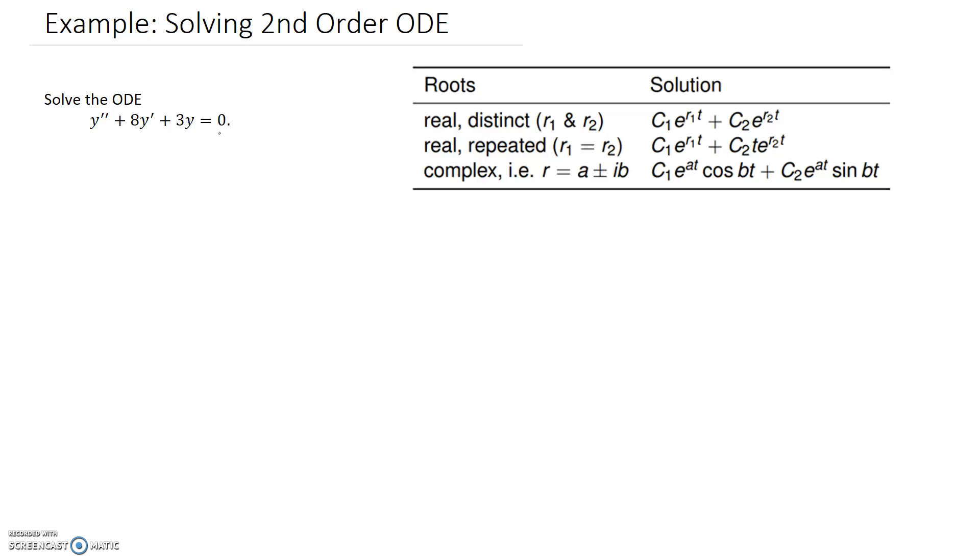The other thing that we can identify is the right hand side here is equal to 0, which means it's going to be a homogeneous differential equation to solve, which is the easier type.